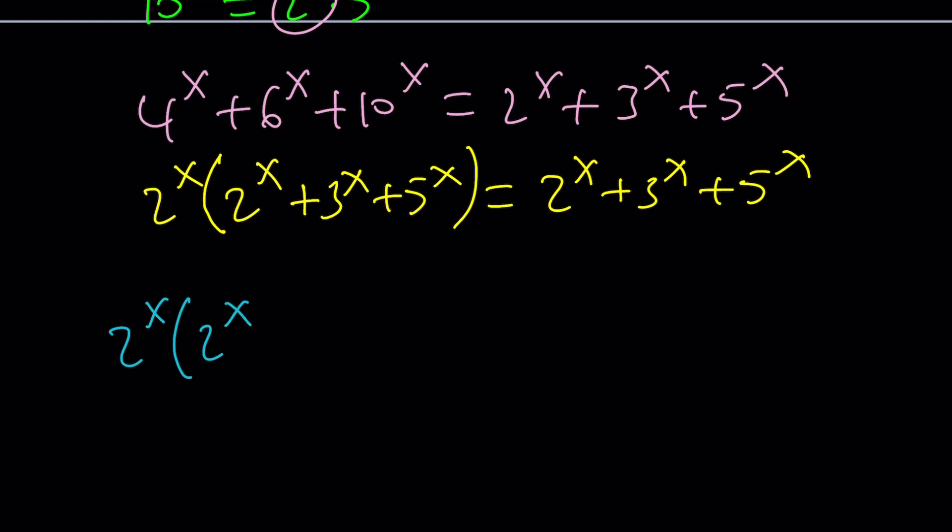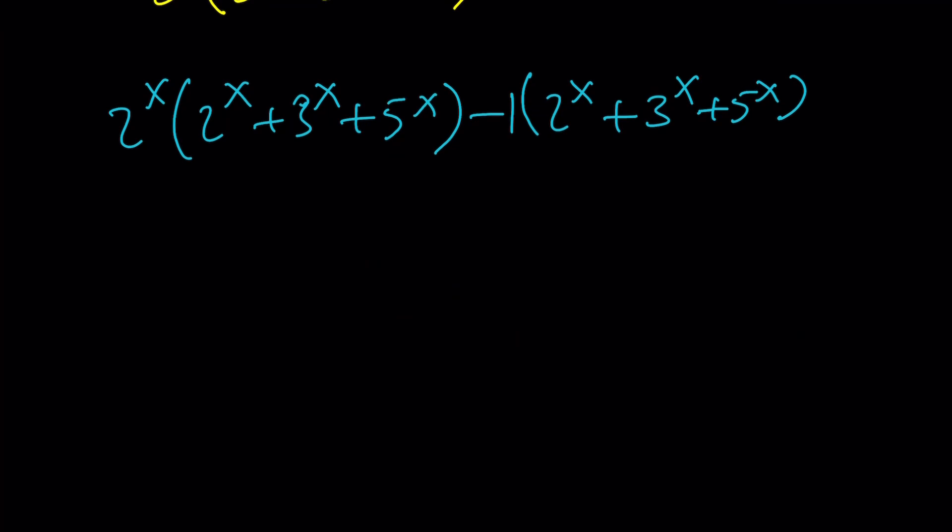So I'm going to go ahead and subtract everything on the right-hand side from the left-hand side. But I want to do it as a quantity, as a single quantity. So I can keep everything positive. And I just want to put a 1 in front of it because there's no number, so it's 1. So now, we have a common factor. Do you see? This one and this one. So we're going to go ahead and take that out.